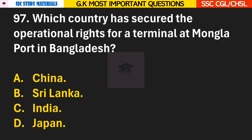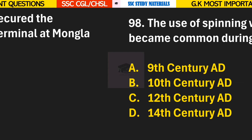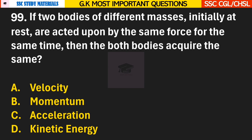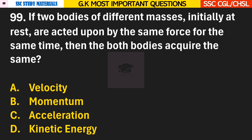Question 97: Which country has secured the operational rights for a terminal at Mongla Port in Bangladesh? Answer C — India. Question 98: The use of spinning wheel Charkha became common during the? Answer D — 14th century AD. Question 99: If two bodies of different masses initially at rest are acted upon by the same force for the same time, then both bodies acquire the same? Answer B — Momentum.